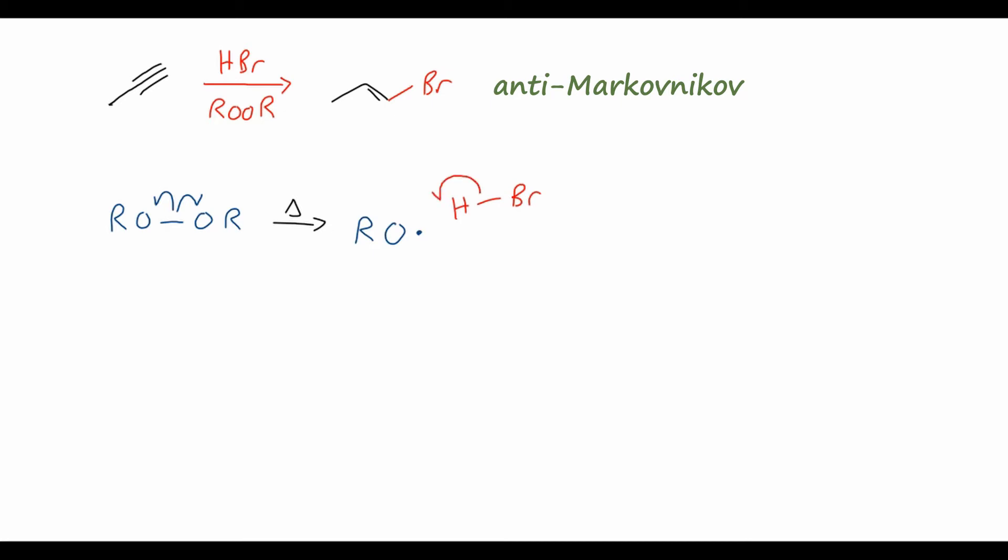Those radicals will then react with the hydrobromic acid, again cleaving this bond homolytically, producing one molecule of the alcohol R-O-H, and then also giving us the reactive bromide radical.